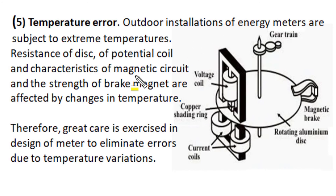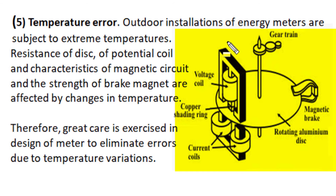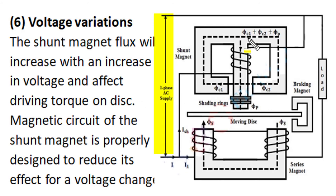Energy meters installed in outdoor locations are subjected to extreme temperature variation, which can cause considerable error. Temperature changes can alter the resistance of the disk, resistance of the voltage coil, magnetic characteristics of the magnetic circuit, or strength of the brake magnet — all affecting driving torque and braking torque on the rotating disk. Some of these effects partially cancel each other. Appropriate care in design and material selection is taken to eliminate errors caused by temperature variation. Variation in supply voltage magnitude can also change the current in the shunt coil and flux of the shunt magnet, affecting driving torque and measurement accuracy.